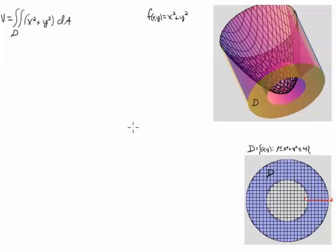Hello students. In this problem, we're going to calculate the volume under this surface, x squared plus y squared, which is this parabolic surface here that you see here.